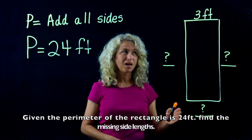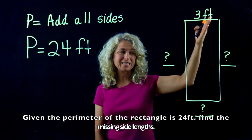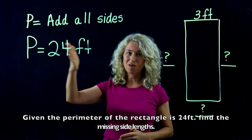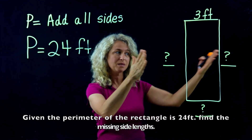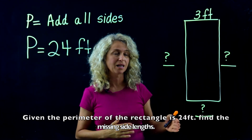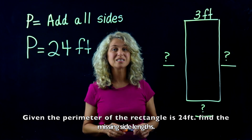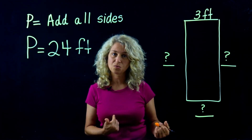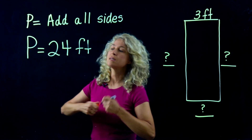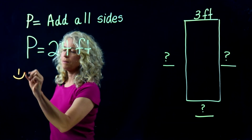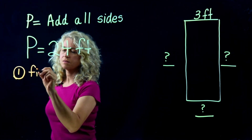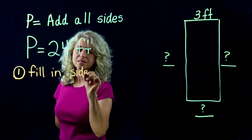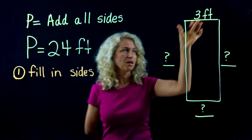We have one side that's given and the total perimeter is already given, but what's missing are the rest of the side lengths. So let's find the missing sides. We're going to do three steps. Number one: fill in what you know — the sides that we can determine.